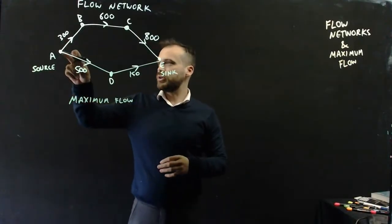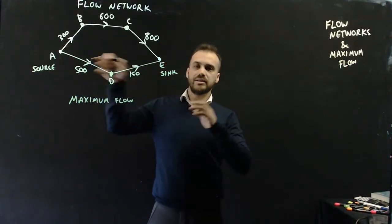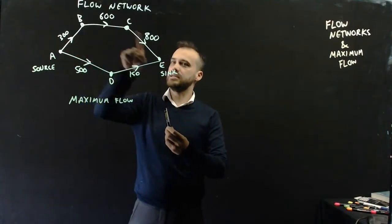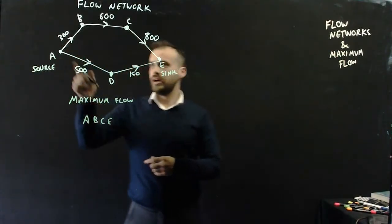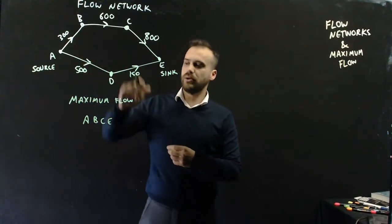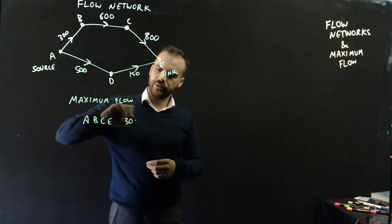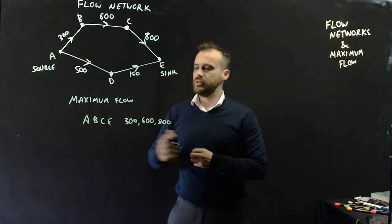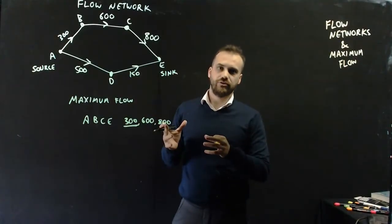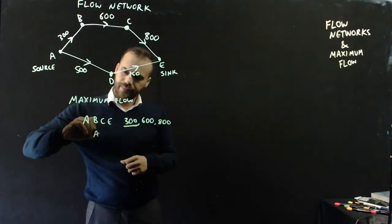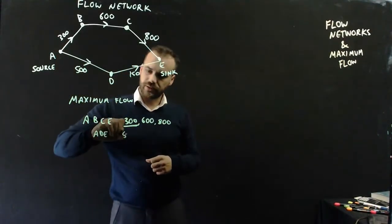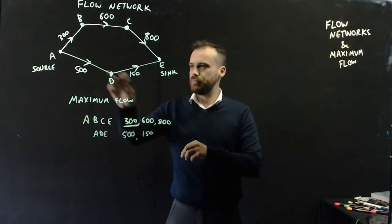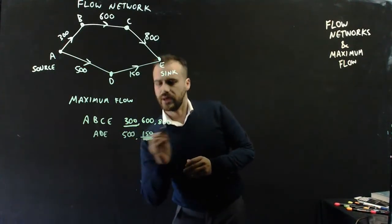To do that, we're going to work through these interconnected pipe sections. Let's look at A, B, C, E first. For A, B, C, E, we've got three pipes: 300, 600, and 800. The bottleneck is the 300. Now let's look at A, D, E: 500 and 150. The bottleneck there is the 150. So water will only flow through at 150.